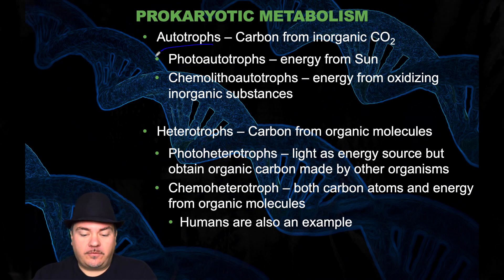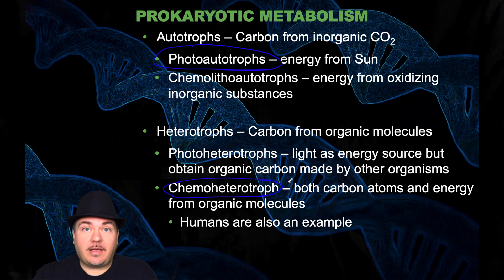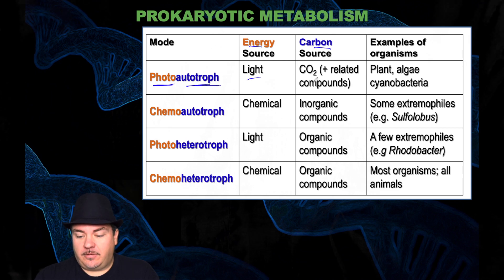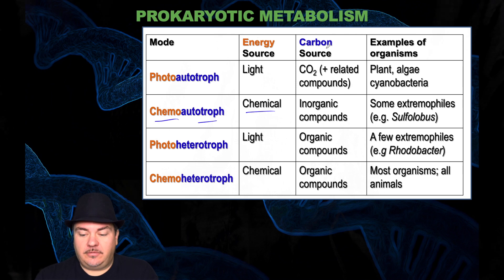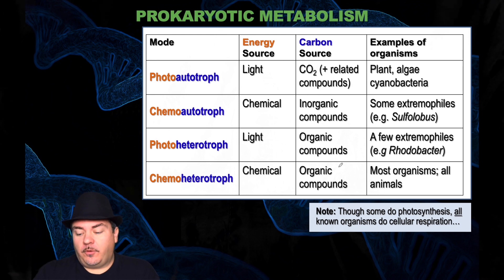An example of a photoautotroph you're familiar with is a plant — they get energy from sunlight and carbon from inorganic carbon dioxide. An example of a chemoheterotroph is yourself — you get your carbon atoms and energy from organic molecules like glucose. Of note, although some organisms perform photosynthesis, all known organisms perform cellular respiration.